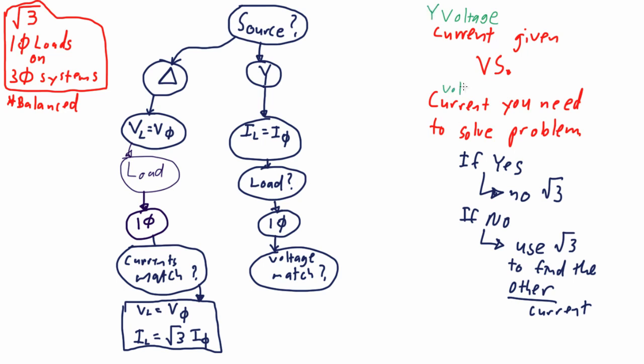If you see the distinction between our two sources here, it's one we're sure of the current, the other we're sure of the voltage. And the same consequence applies. If it does match, then no root three is necessary to make the voltage applicable to our final calculations.